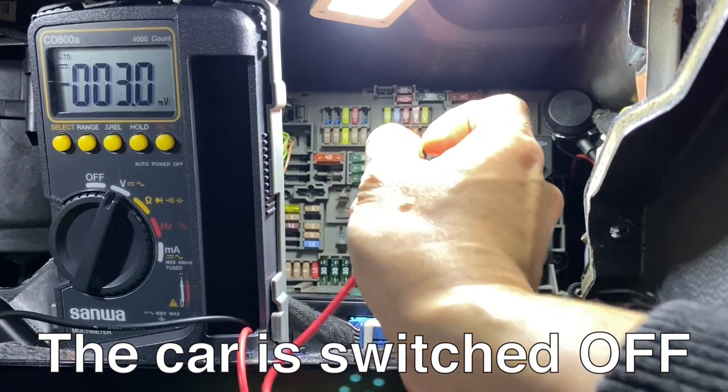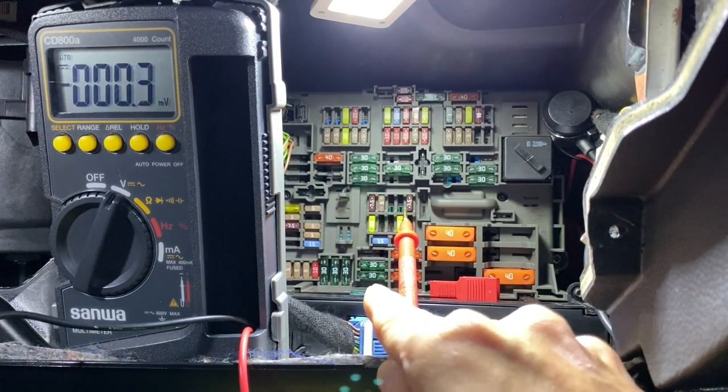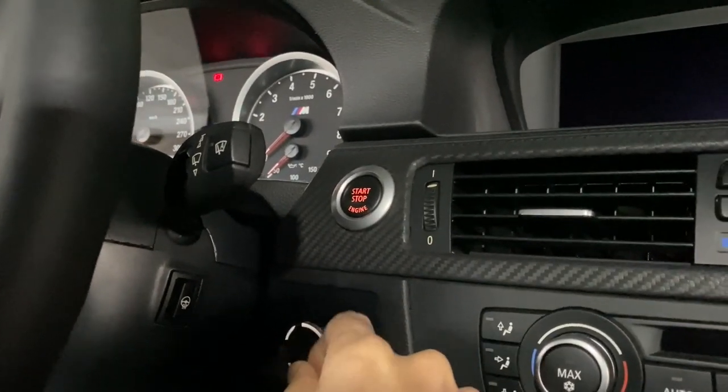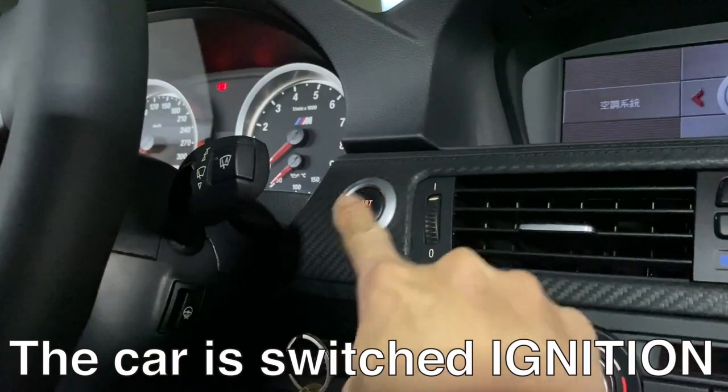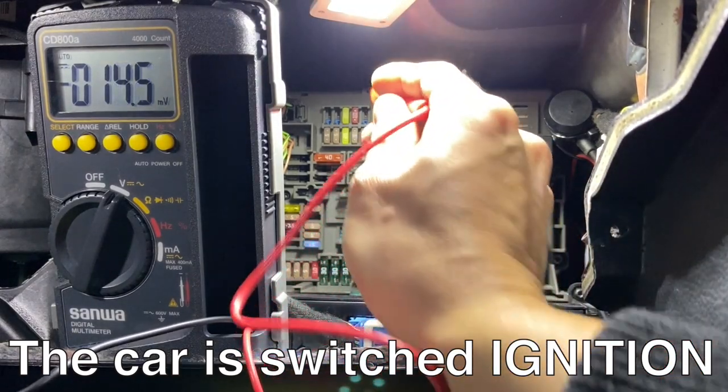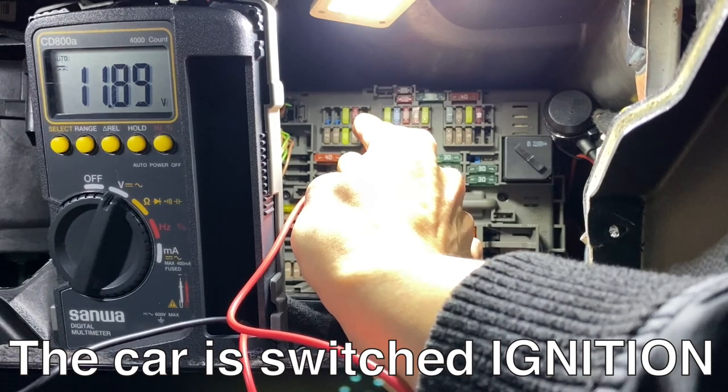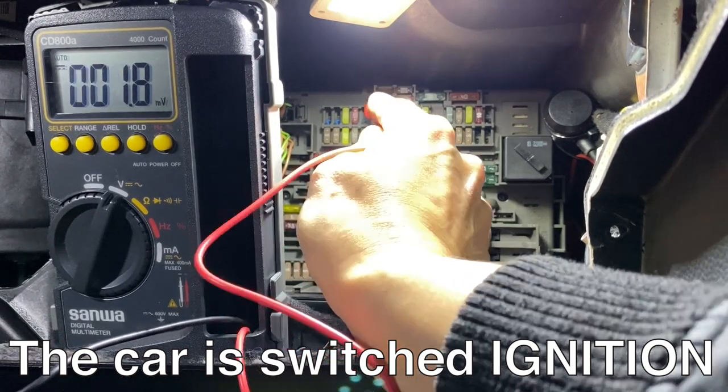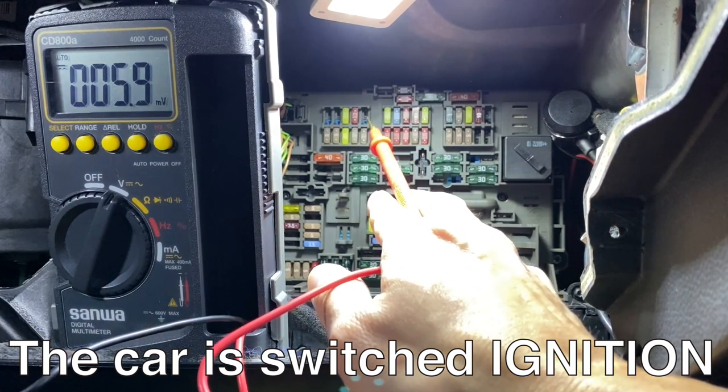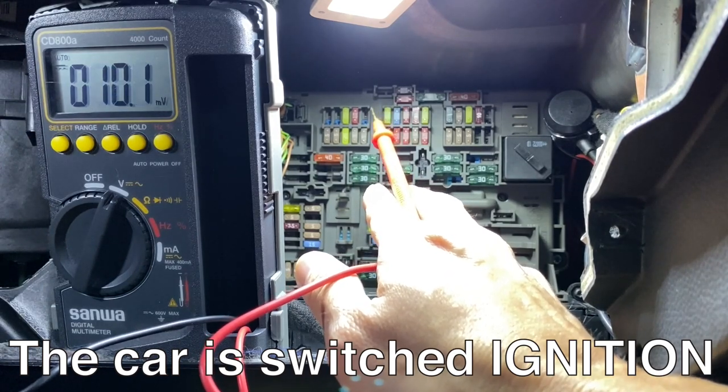If I switch on ignition, let's switch on the car. Now, it has power around 12V. So, fuse slot number 5 is on terminal 15. It provides power whenever the car is switched on into ignition.